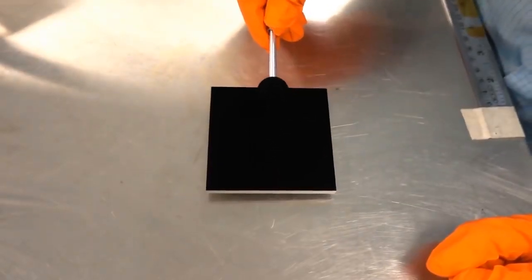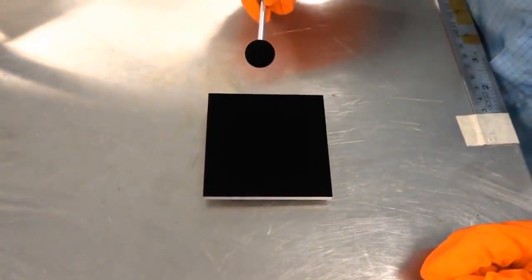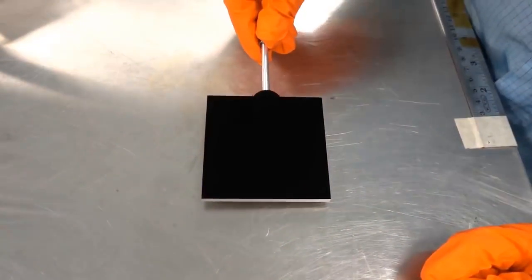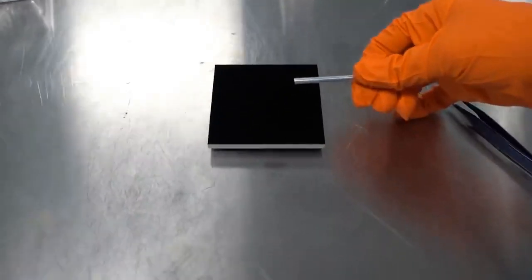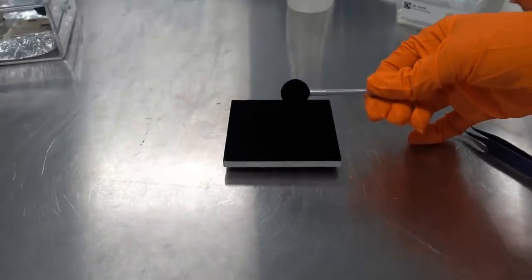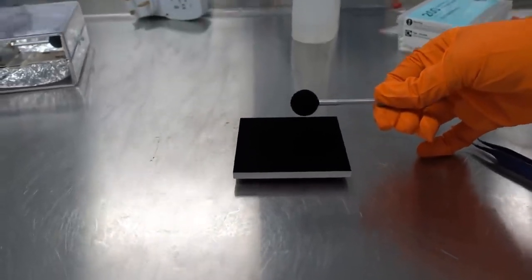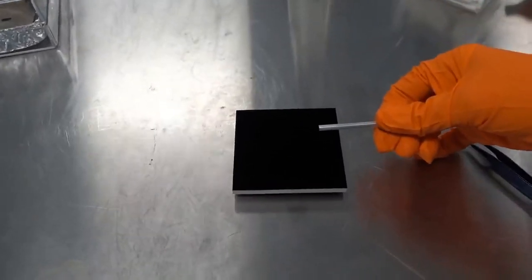Vantablack is so dark that the human eye can't discern its shape and dimension, which means if you were to cover a round object and pass it in front of another object coated in Vantablack, the round object will disappear and both objects will appear completely flat.